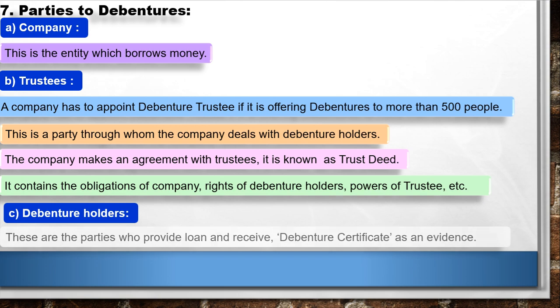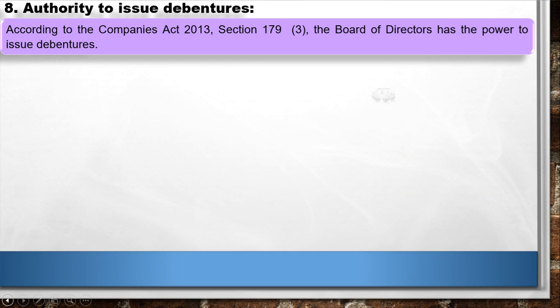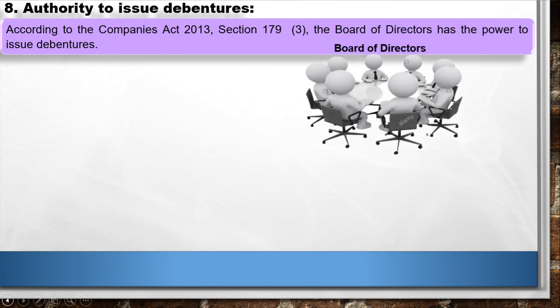C. Debenture Holders — these are the parties who provide the loan and receive the debenture certificate as evidence. 8. Authority to Issue Debentures: According to the Companies Act 2013, Section 179, Subsection 3, the Board of Directors has the power to issue debentures.